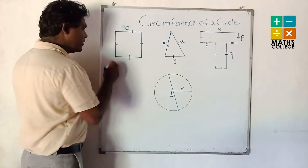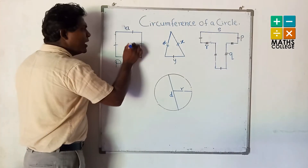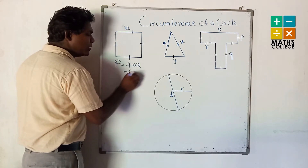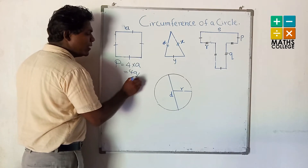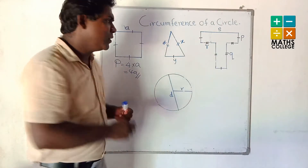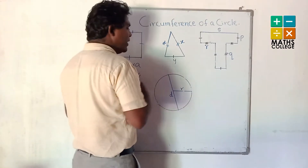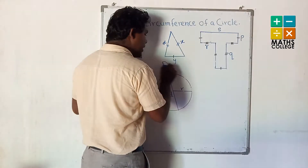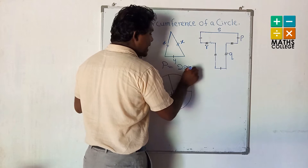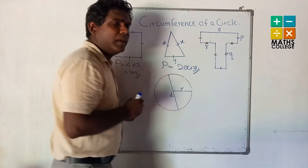All sides are equal, so we can write P equals A multiplied by 4, that means P equals 4A. For this triangle with two sides X and one side Y, we can write P equals 2X plus Y.